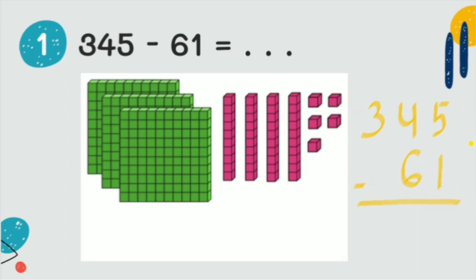First, we subtract the ones. Five minus one — we cross one one here. Now we have only four ones, so we write four.